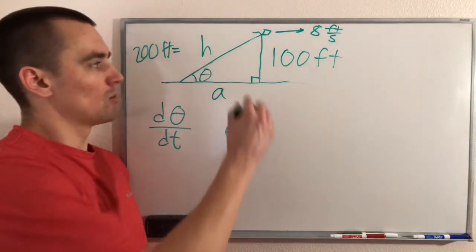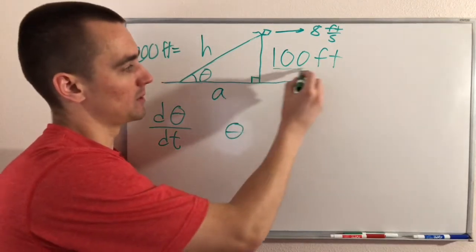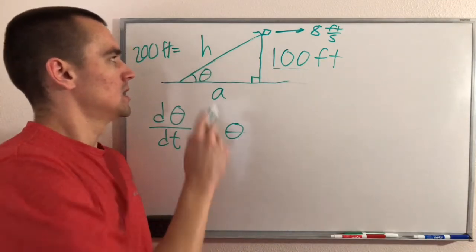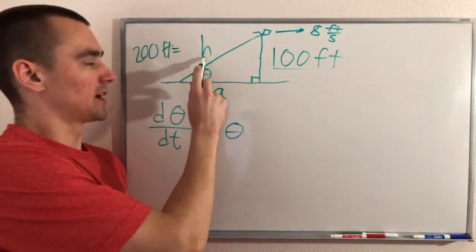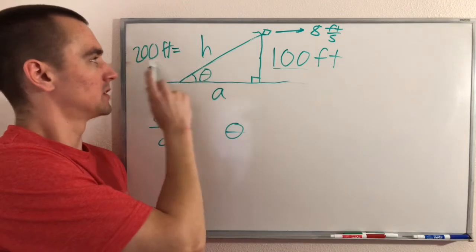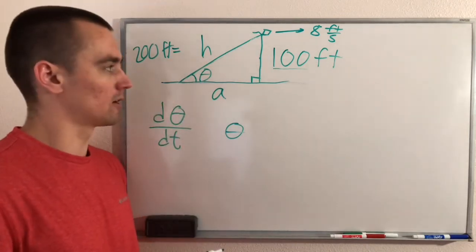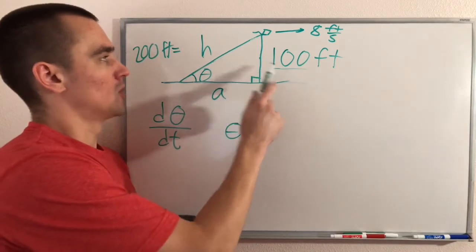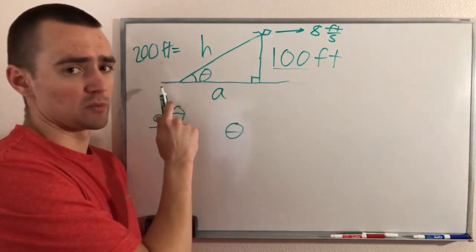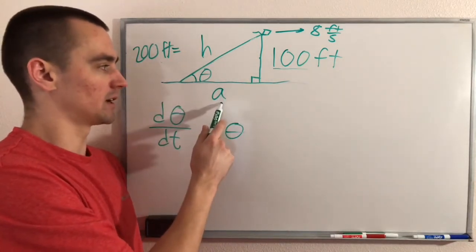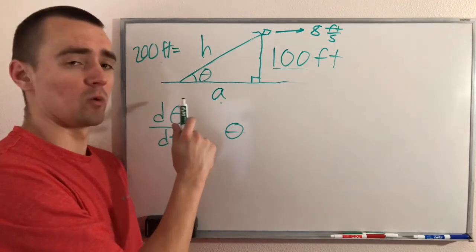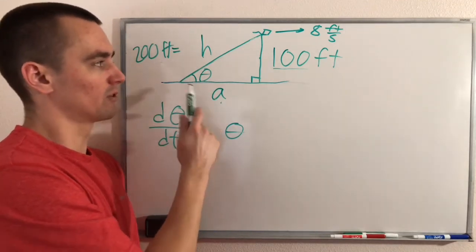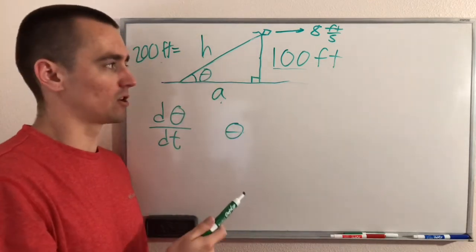The other thing to think about is which other pieces we know information about. We know the vertical side length is 100 feet, and we know the string length h is 200 feet at the instant we care about. Since this is a right triangle and we know both of those side lengths, we could use the Pythagorean theorem to figure out the third side. So really any of our side lengths are okay to include in our equation.